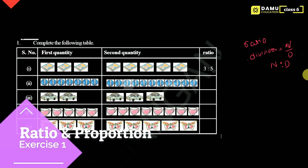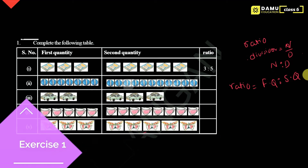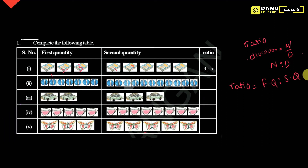They took ratio of first quantity to second quantity. Here, counting the first quantity: 1, 2, 3 — so 3. Then the second quantity: 1, 2, 3, 4, 5 — so 5 is written here. The ratio is 3 is to 5, first quantity to second quantity.